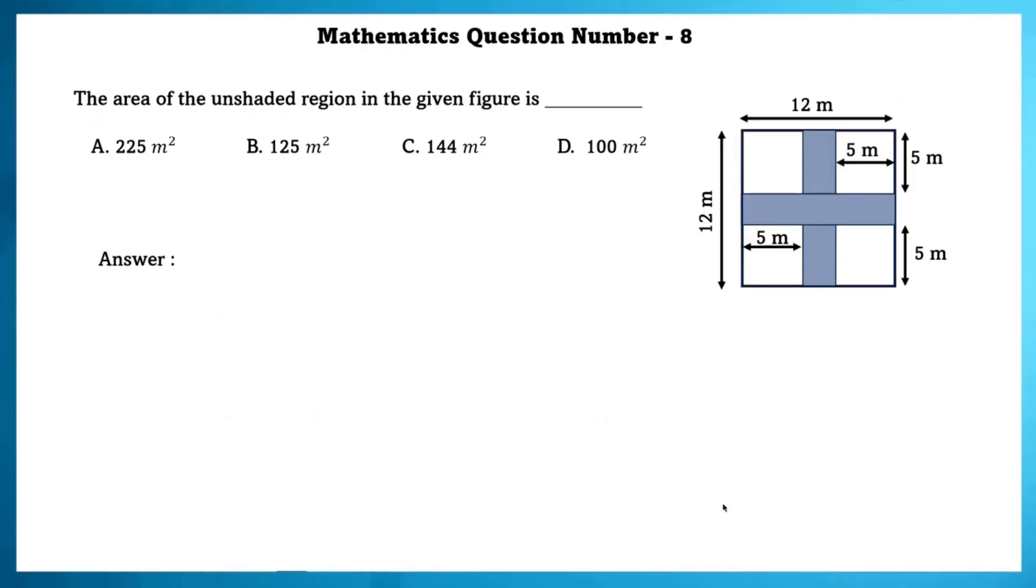Mathematics question number 8. The area of the unshaded region in the given figure is? As we can see here 4 rectangles are unshaded in the given figure. Area of the total unshaded part is equal to area of rectangle 1 plus 2 plus 3 plus 4. That is equal to 100 m square.